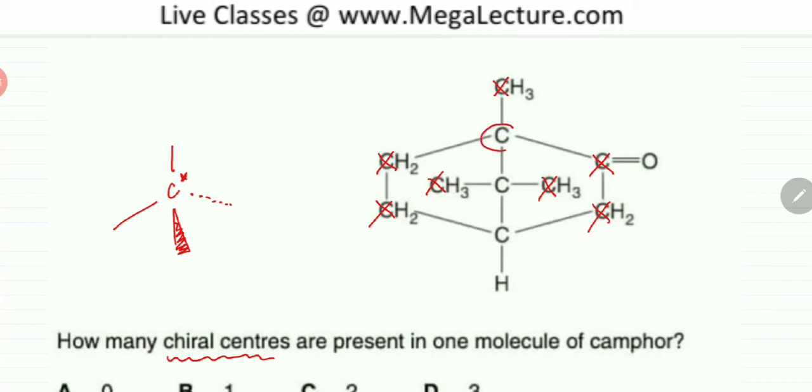We're left with this carbon atom. Now look at this carbon atom. It is attached to four different groups. Top is CH3. This side there's a chain. This side there's a different chain. And at the bottom there's a different chain. So all four sides of this carbon atom are different. So this one is chiral.